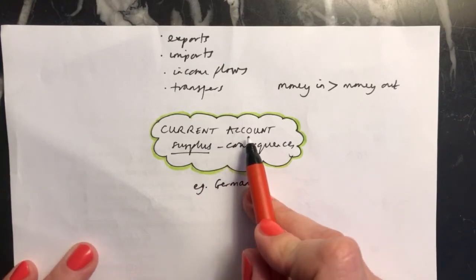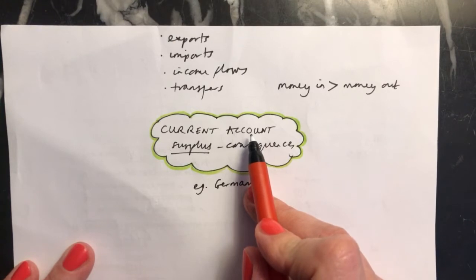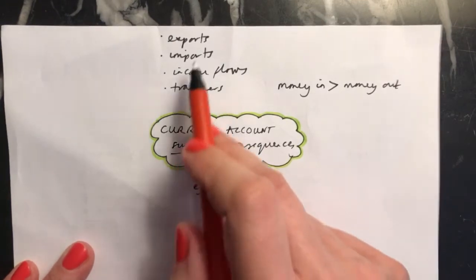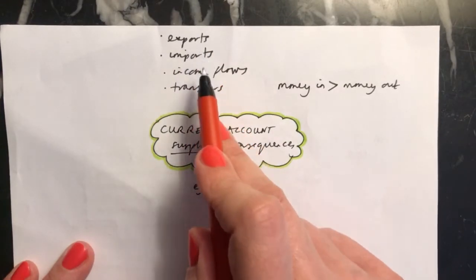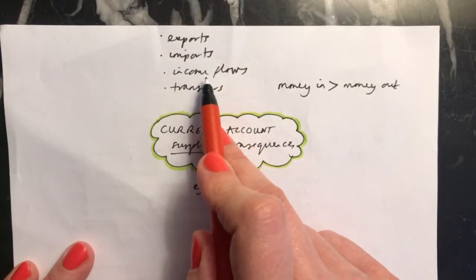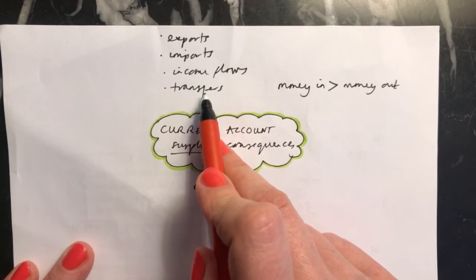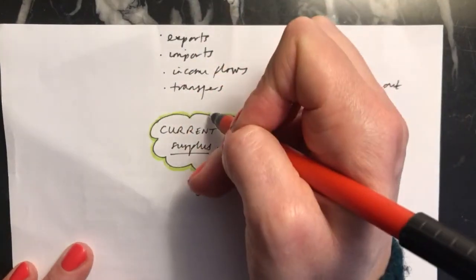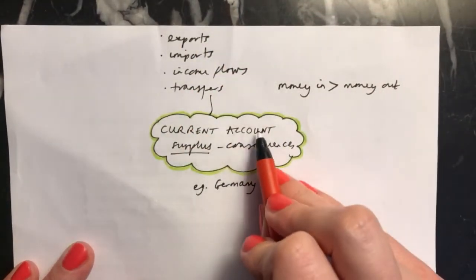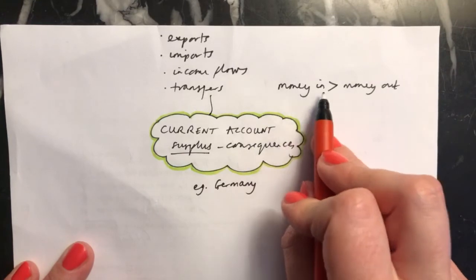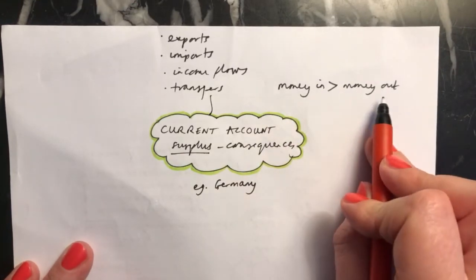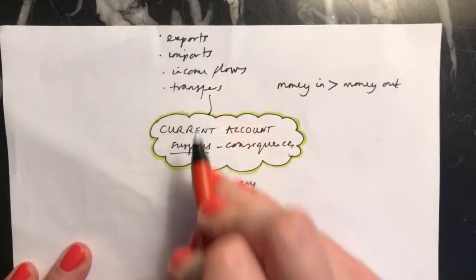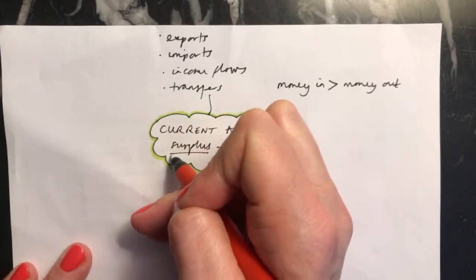Remember, the current account is part of the balance of payments, and it looks at the money that's coming into the country and the money that's leaving the country because of exports, imports, income flows from dividend, interest and profits, and transfers. This is addressed in a different video. And if you have a current account surplus, that means that the money coming into your country is greater than the money leaving your country because of these four things. Therefore, you have a surplus.